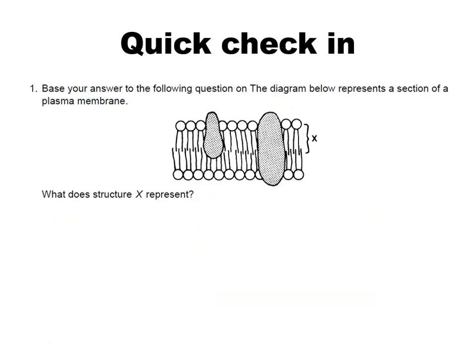Here's a quick check-in: see if you can figure out what structure X represents without looking at your notes. That's going to be the phospholipid. And these are proteins. If you wrote phospholipid for X, you got that right. This is what we call an integral protein because it goes all the way through. And this would be a peripheral protein because it's just on the periphery — it doesn't go all the way through the layer.